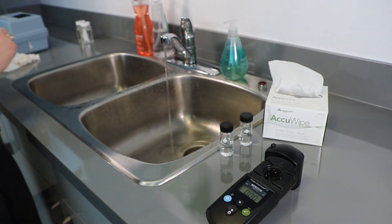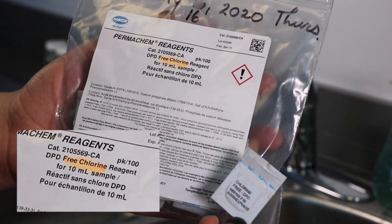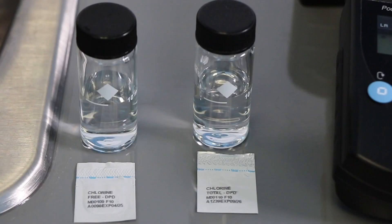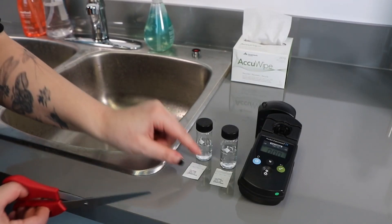For a low range sample of free chlorine, take one packet of DPD free chlorine reagent. For a low range sample of total chlorine, take one packet of DPD total chlorine reagent. Add the contents of the reagent packet to the water sample.